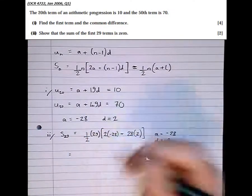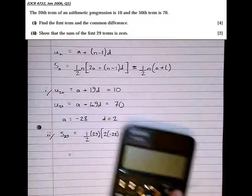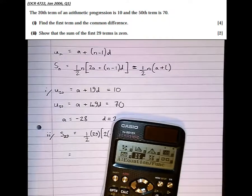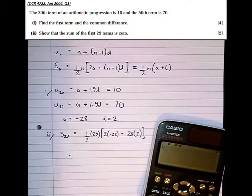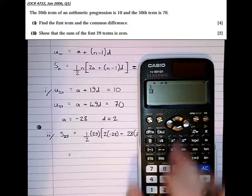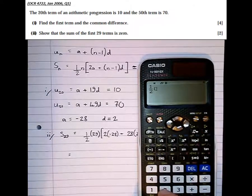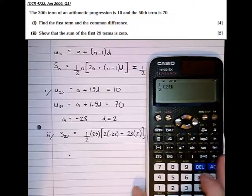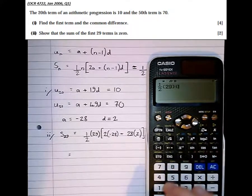Okay, equals, so let's just check this in our calculator. So let's go back to ordinary calculation mode. So 1 half, type in the calculator exactly what appears on the screen. 29, open bracket,